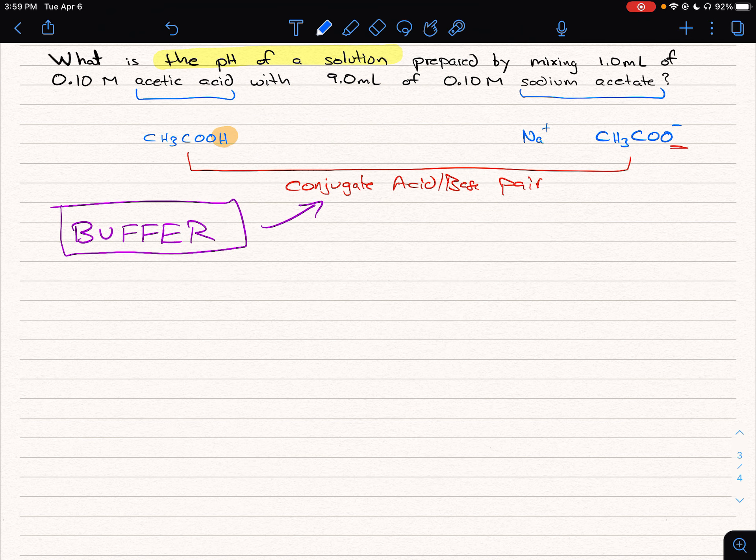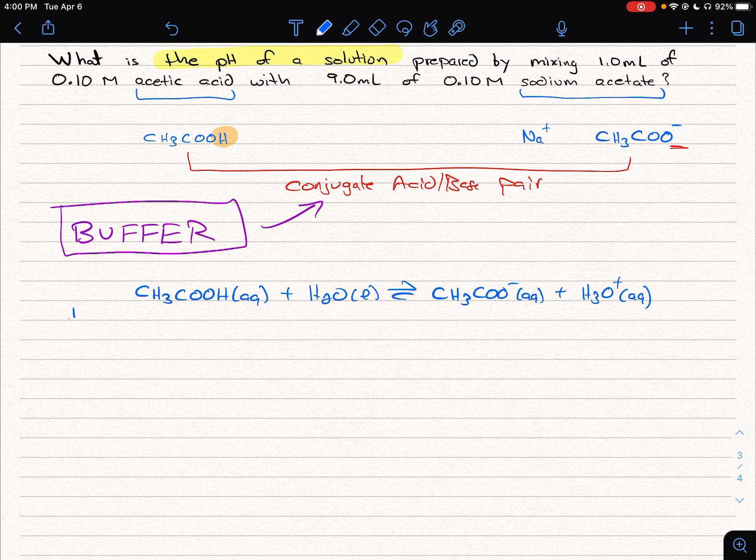So the reaction we're going to write for this, we're always going to deal with buffers by dealing from the perspective of the acid. We're going to have weak acid plus water goes to our acetate plus hydronium. This is the equilibrium we're going to deal with. And then if we want to go ahead and solve this, what we would do is start to set up our ICE table.